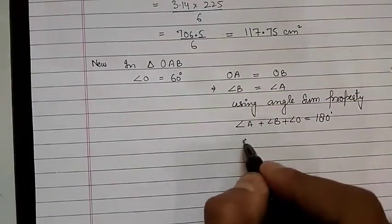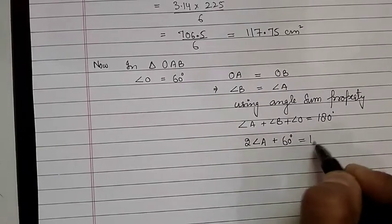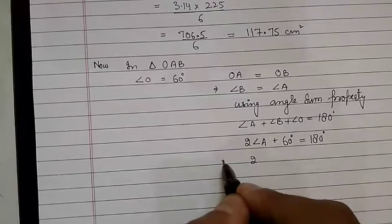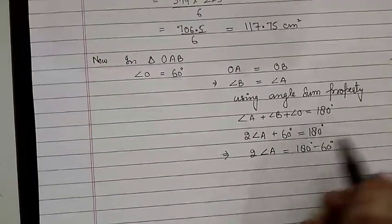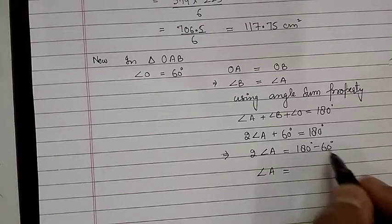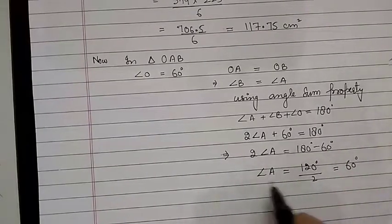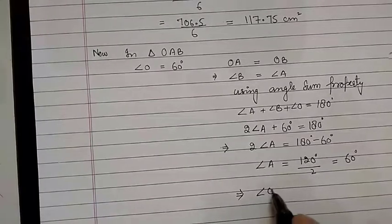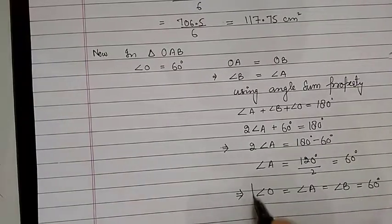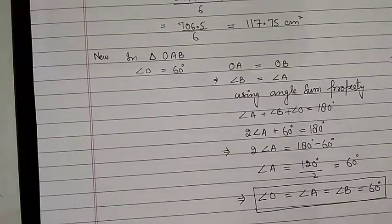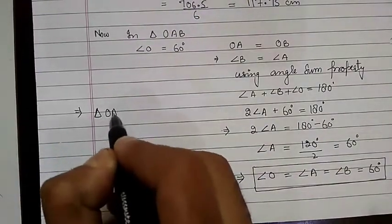Since angle A equals angle B, we write: 2 × angle A + 60° = 180°. This implies 2 × angle A = 120°, so angle A = 60°. Therefore angle O = angle A = angle B = 60°. A triangle in which all three angles are 60° is an equilateral triangle — so triangle OAB is an equilateral triangle.